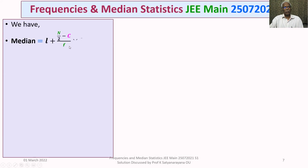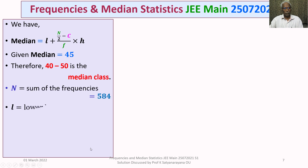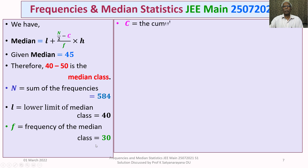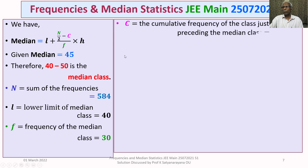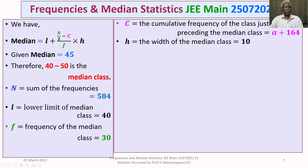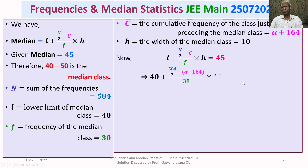Now we substitute into the median formula. Median equals 45, so: 45 = 40 + ((584/2 − (alpha + 164)) / 30) × 10. With L = 40, N = 584, C = alpha + 164, F = 30, and H = 10, we substitute all values and rearrange, moving 40 to the other side to get 5 on the right-hand side.